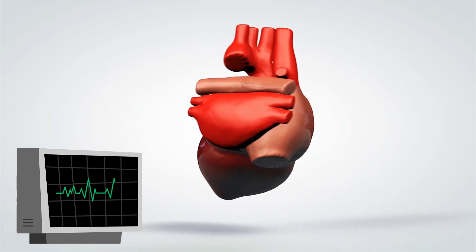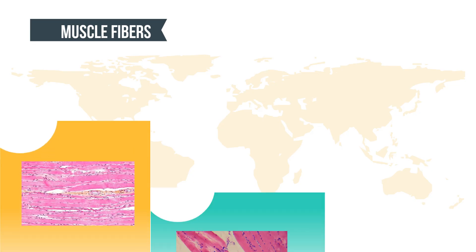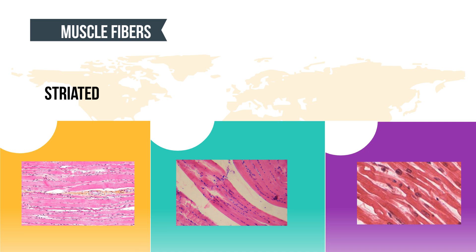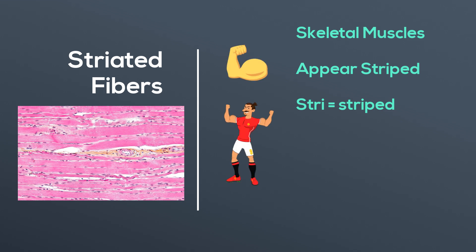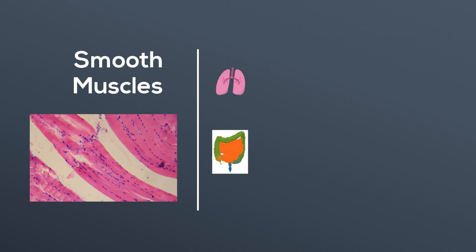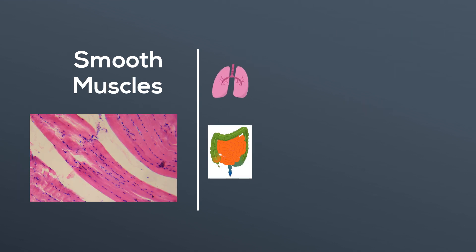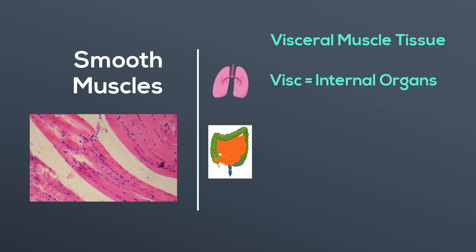There are certain fibers of muscles: striated, smooth, and cardiac. Striated fibers are skeletal muscles and they appear to be striped, so they are called striated muscles. Stri is a Latin term meaning striped. Smooth muscle fibers are also called visceral muscle, which is a Latin term for internal organs.